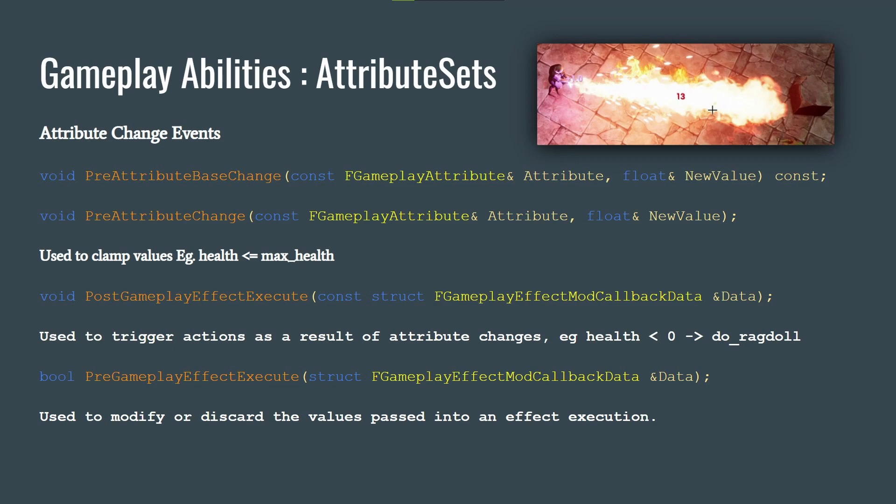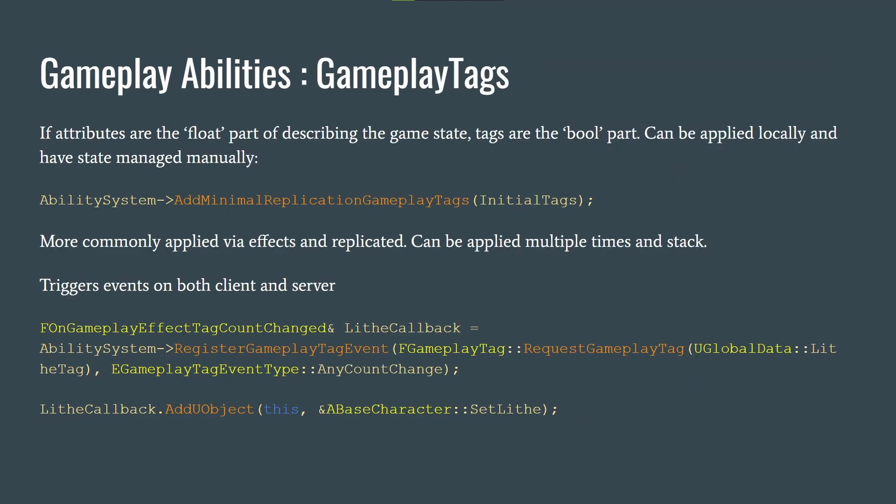Gameplay Tags don't have to be used only with GAS — you can use them anywhere in your project. If attributes are the float part of describing game state, tags are the boolean part. They can be applied locally with state managed manually. By default, loose gameplay tags aren't replicated, but you can send whichever gameplay tag you choose to be replicated. They can be applied multiple times and stacked, and more commonly they're applied via effects.